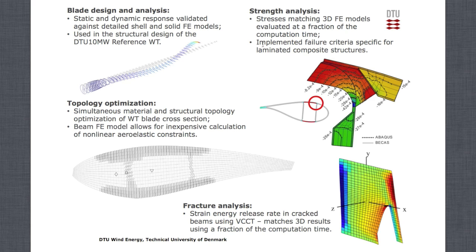Another area is strength analysis, which was used in the design of the DTU 10 MW reference turbine blade and validated against 3D solid models. An example shows validation against Abaqus for a detail of the blade where the shear web meets the cap, with a very good match between the stresses calculated using BIKES and the 3D solid models. We have also recently implemented failure criteria specific for laminated composite structures, like maximum strain, maximum stress, and SIWU failure criteria, and validated those as well.